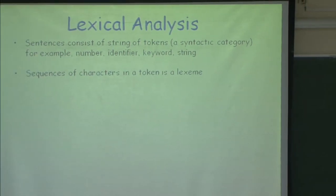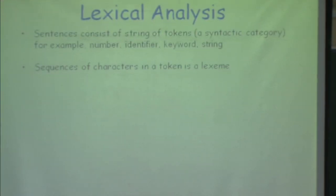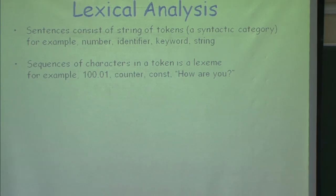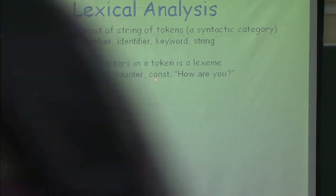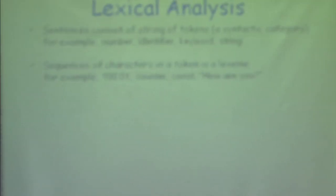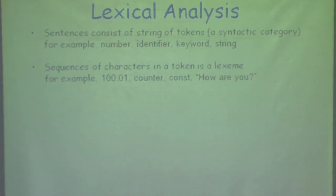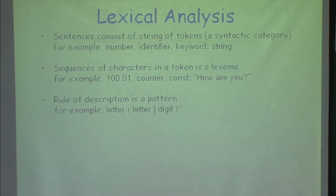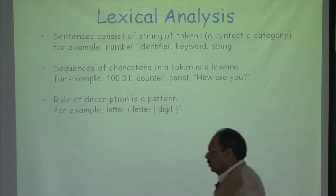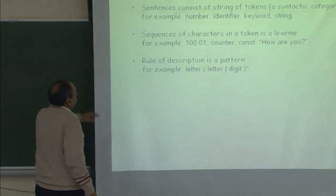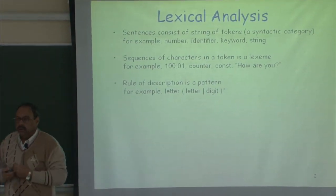Examples of tokens include numbers, identifiers, keywords, and so on. The sequence of characters forming a token is really the lexeme. For example, 100.01 is a number; 'counter' is an identifier; a keyword could be 'const'; a string always comes within quotes. So the string is really the lexeme associated with a particular token. A rule might say how an identifier is constructed: each identifier must start with a letter and must be followed by zero or more occurrences of a letter or digit.